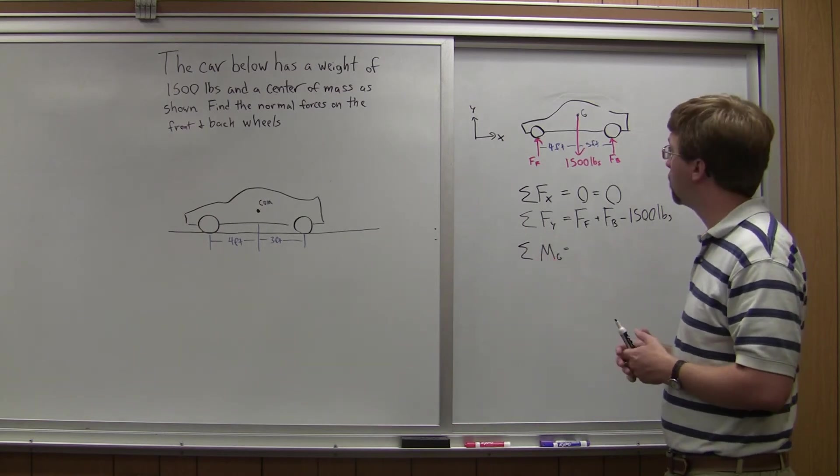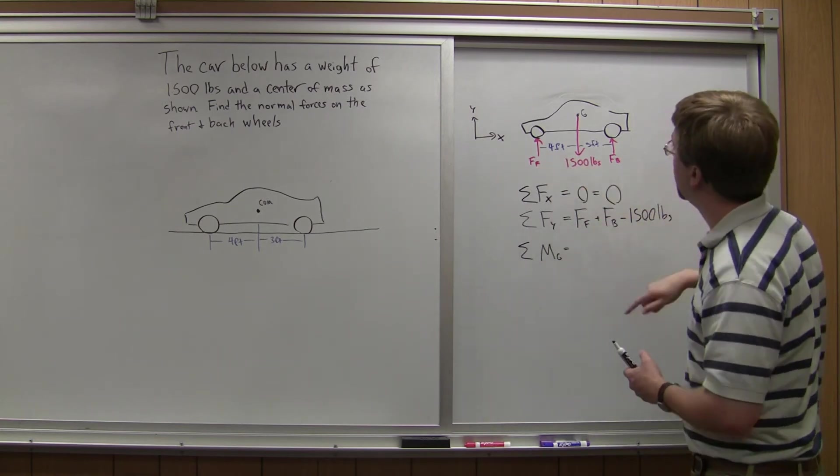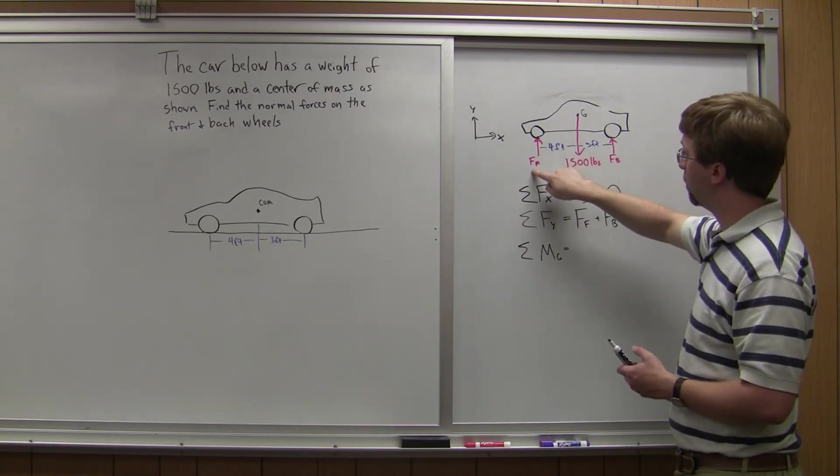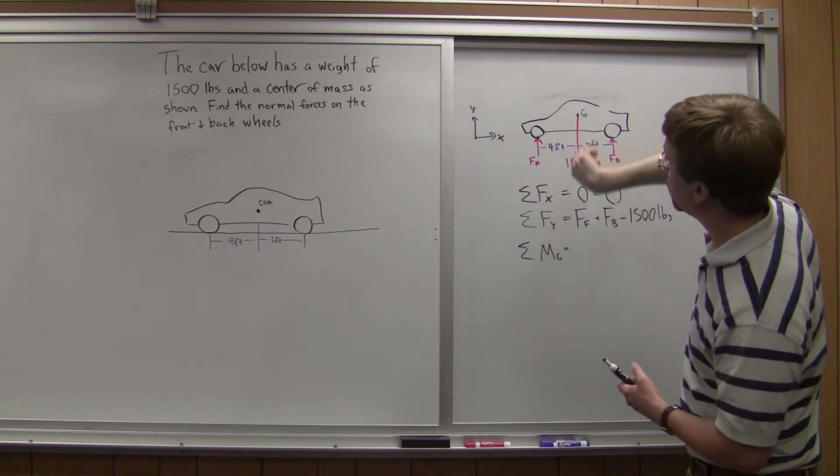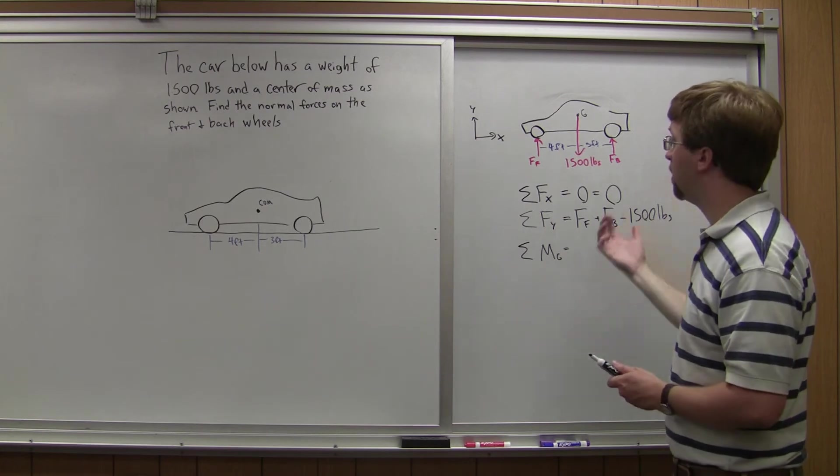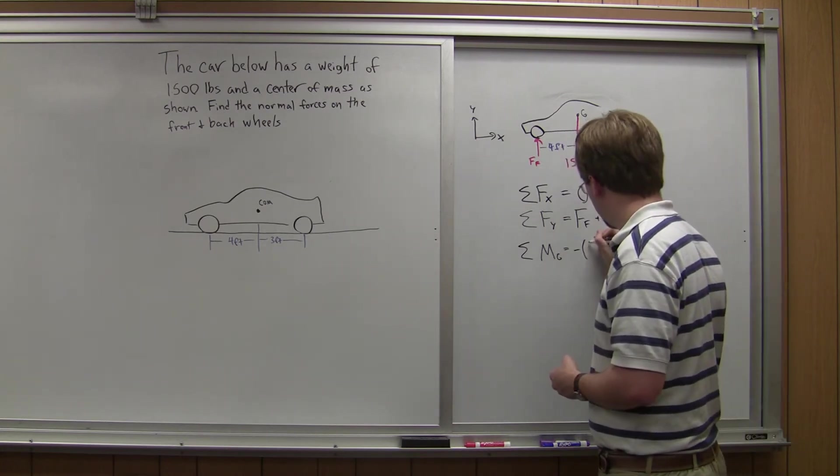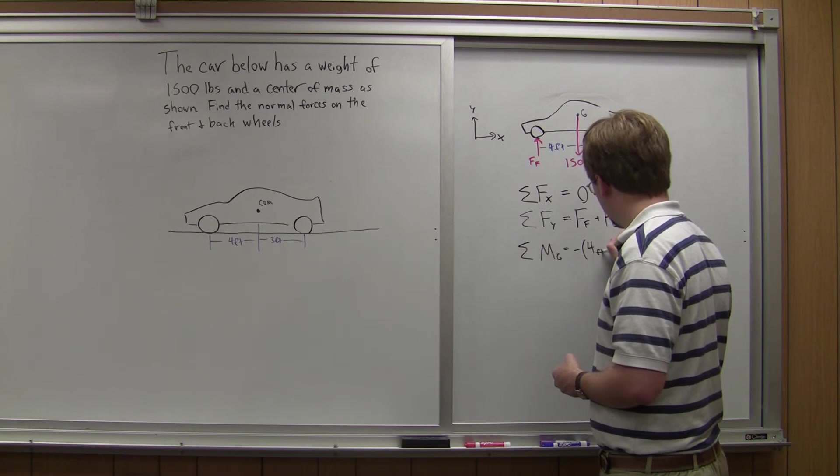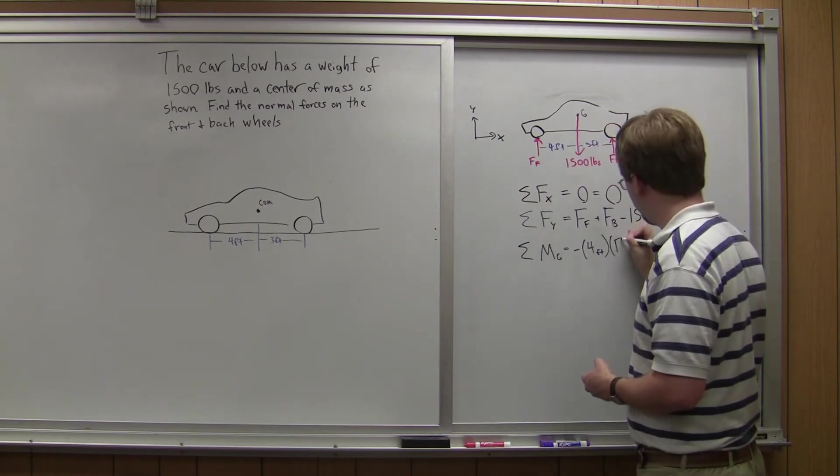Ff is going to exert a negative moment. So it's 4 feet, force times distance, so Ff times 4. And I use the right-hand rule, and it's going into the board, so that's a negative moment. So negative 4 feet times Ff.